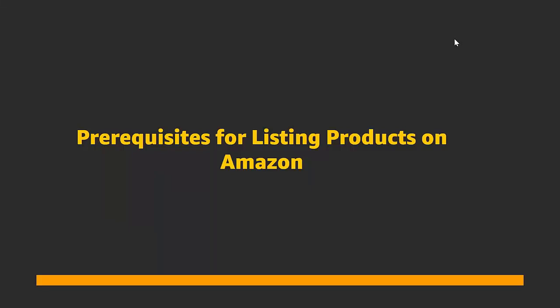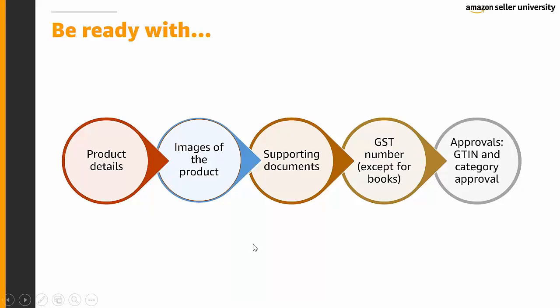Hello sellers, welcome to the online training on pre-requisites for listing products on Amazon. Before you list products on Amazon, make sure that you are ready with the product details, images of the product, supporting documents, GST number (except for books), approvals, GTIN exemption, and category approval.